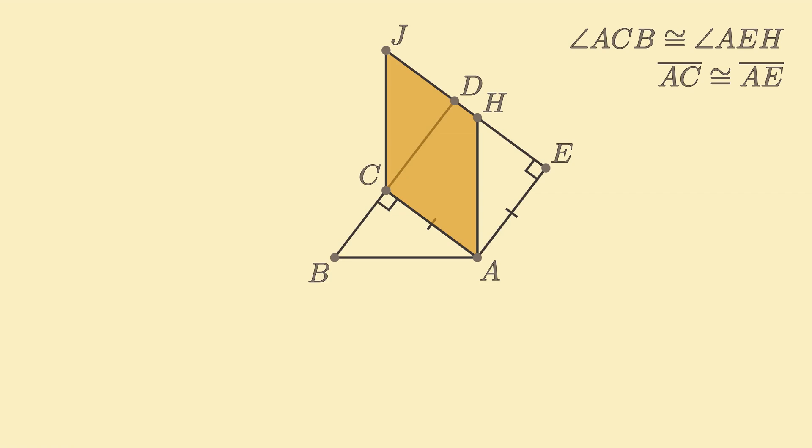To obtain this final piece of information, we note that angles BAH and CAE overlap at angle CAH. We can use this fact to show that angles BAC and HAE are congruent.